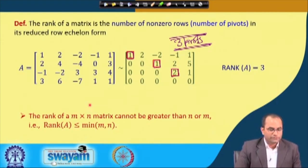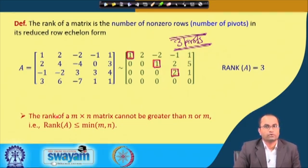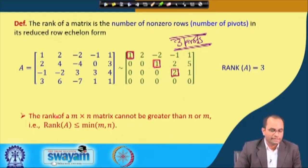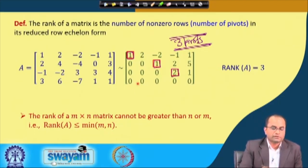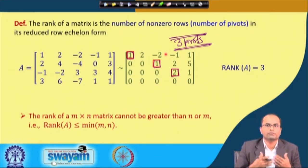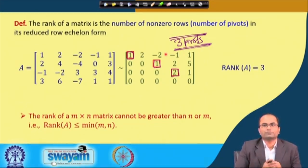As a consequence of this definition, we can easily see that the rank of an m×n matrix cannot be greater than n or m. Here m is the number of rows and n is the number of columns, and the rank cannot be greater than m or n — it has to be less than or equal to the minimum of m and n. The reason is clear because each row or each column cannot have more than one pivot; a row cannot have 2 or more pivots, and a column cannot have 2 or more pivots.